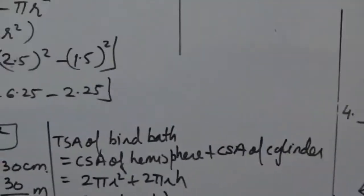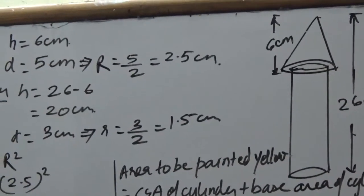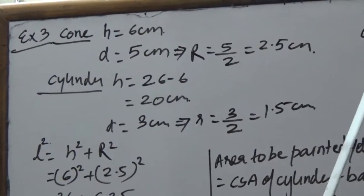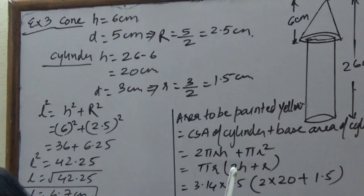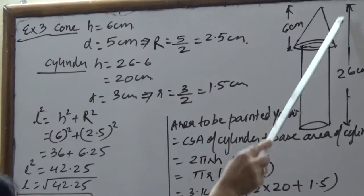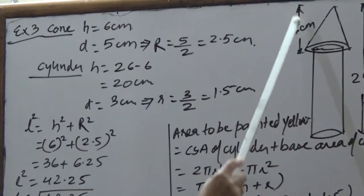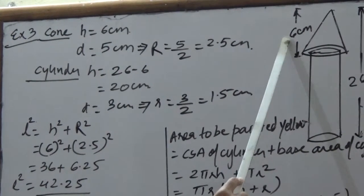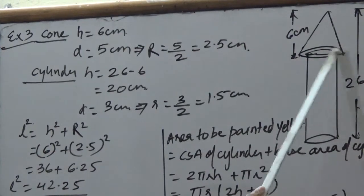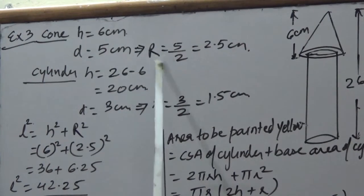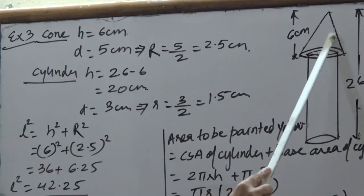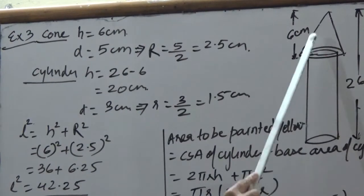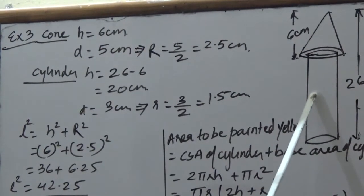Example 3: A wooden toy rocket is in the shape of a cone mounted on a cylinder. The height of the entire rocket is 26 cm, the height of the conical portion is 6 cm, and the diameter of the cone's base is 5 cm, giving a cone radius of 2.5 cm. The cylinder's diameter is 3 cm, so its radius is 1.5 cm. We need to find the area to be painted orange (conical part) and yellow (cylindrical part).